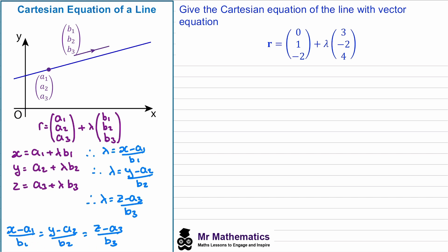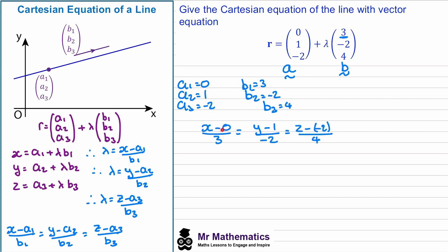In this example we need to give the Cartesian equation of a line with a given vector equation. We have a position vector and a direction vector, so a₁ = 0, a₂ = 1, a₃ = −2, b₁ = 3, b₂ = −2, and b₃ = 4. Substituting into the Cartesian equation and tidying up — removing the negative 0 — gives a valid Cartesian equation. We could also multiply through by −1 to make the −2 term positive, giving an equivalent form of the equation.